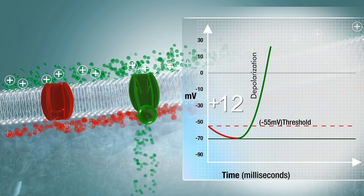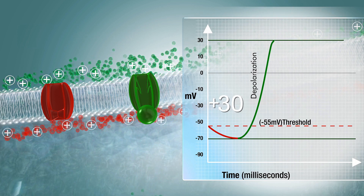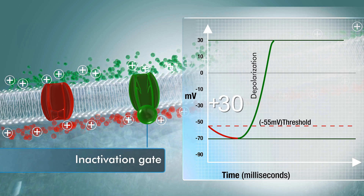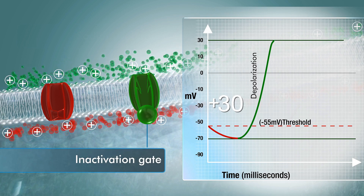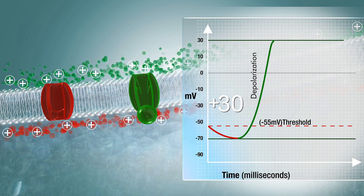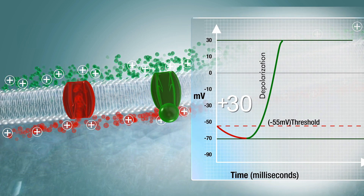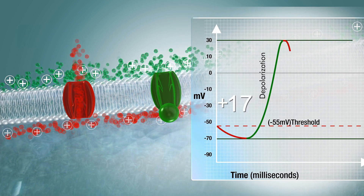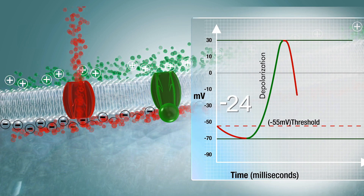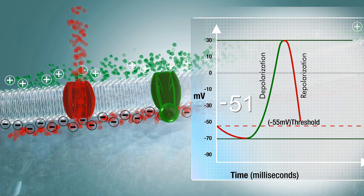In actuality, before the sodium channels close, enough sodium ions diffuse in to cause the inner surface of the cell membrane to become positively charged. The purpose of the inactivation gate is to prevent the membrane from stimulating itself and causing repeated action potentials. At the same time the sodium channels close, the slower voltage-gated potassium channels open and allow potassium ions to rapidly diffuse out of the cell. The removal of positive charges from the inside of the membrane causes its internal surface to become negatively charged again, or repolarized.